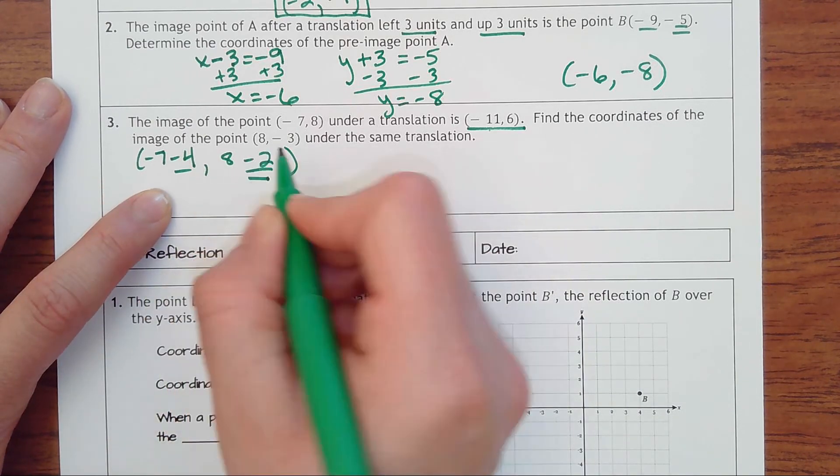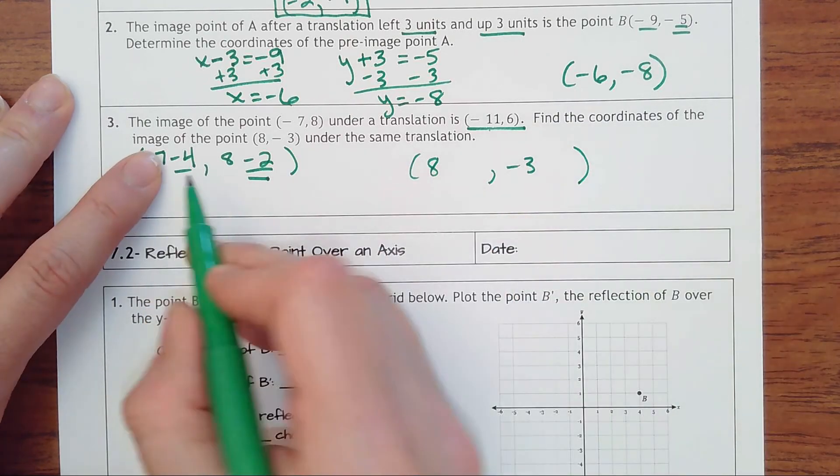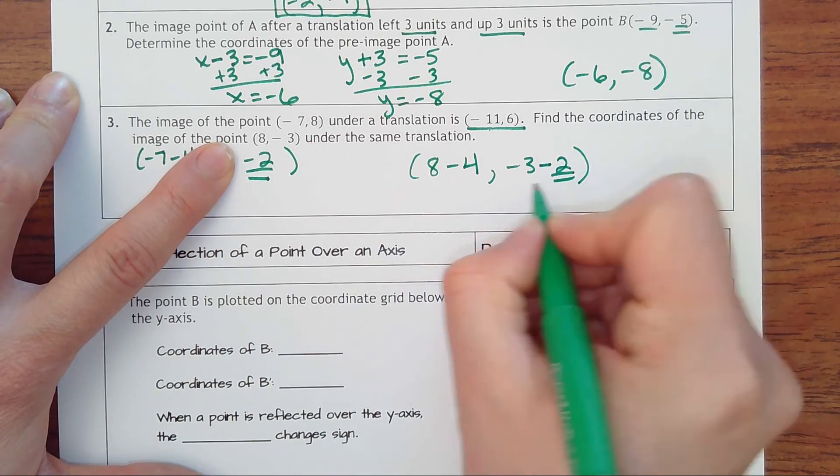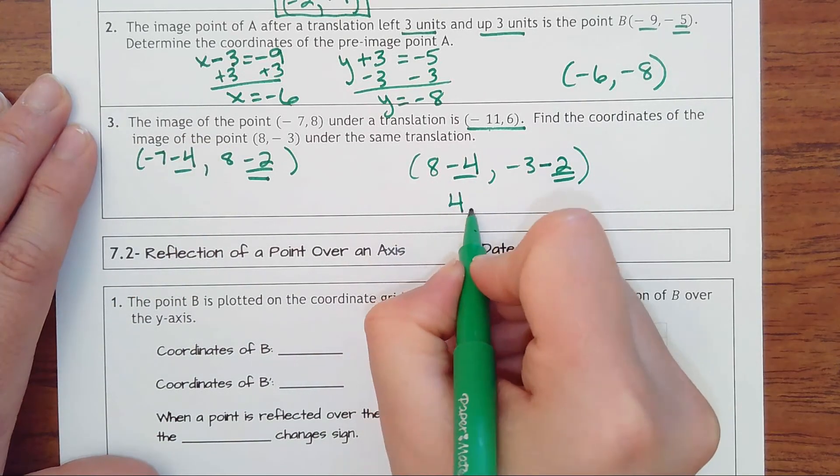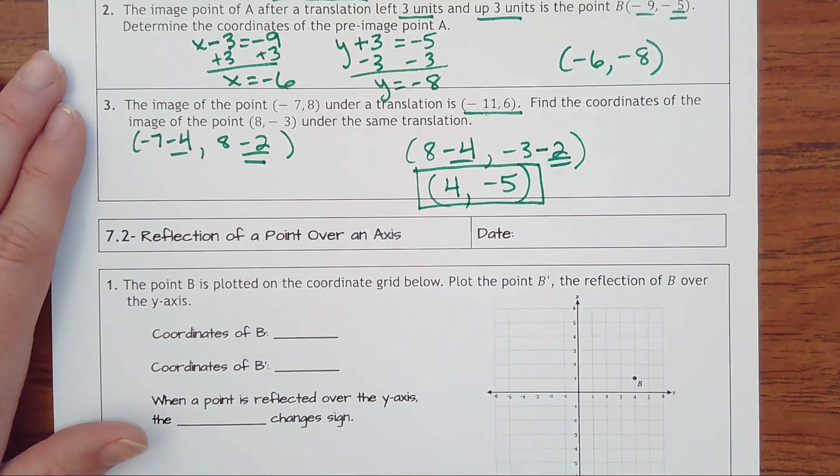I would have to do the same thing to the point (8, -3). So I would have to go down four and left two. And so that would result in (4, -5). So that's how you do translations without putting it on a graph.